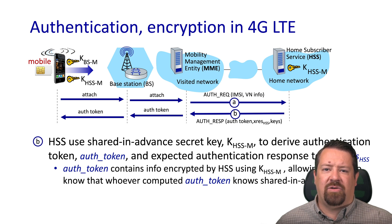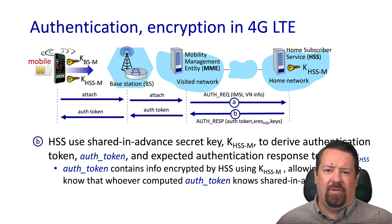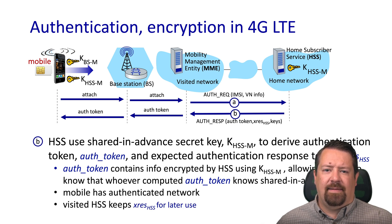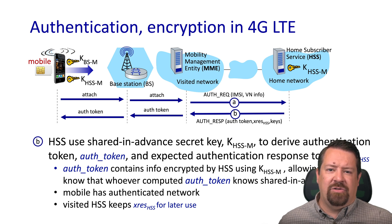The authentication token is also encrypted using the initial shared secret, so the mobile device is able to validate that it came from the home network. At that point it's not authenticating the visited network directly, but it is authenticating the fact that the visited network was able to get an authentication token from the home network, and therefore the visited network should be trusted. The mobile device has now authenticated the network by proxy, and the visited network keeps the authentication response token for later use.